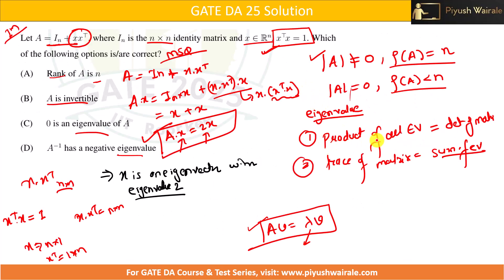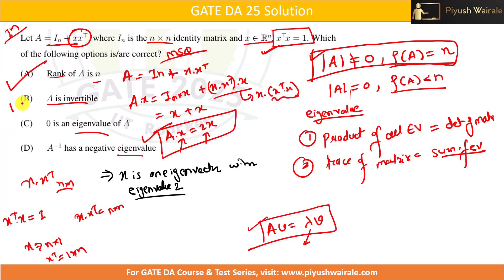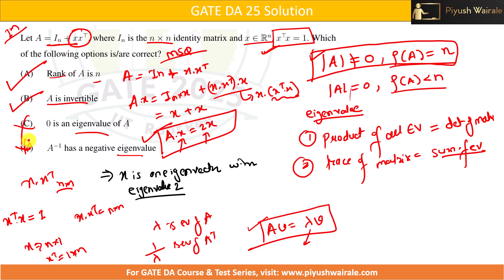Since no eigenvalue is zero, the product of all eigenvalues is a finite nonzero number, meaning the determinant of A is not zero. Therefore the rank of A equals n — option A is correct. Since the determinant is nonzero, A-inverse exists — option B is also correct. Option C says 0 is an eigenvalue of A — that is false. Option D about A-inverse having negative eigenvalues is also false, since 1/lambda is the eigenvalue of A-inverse, which gives 1 and 1/2, both positive.